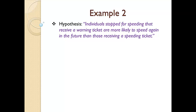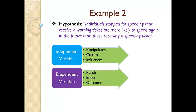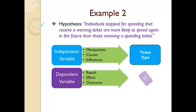This time, let's look at a hypothesis for a criminal justice related study. My hypothesis in this study will be: individuals stopped for speeding that receive a warning ticket are more likely to speed again in the near future than those receiving a speeding ticket. Take a moment and look at the criteria for both the independent and dependent variables. If you said the type of ticket is the independent variable, you are right. The type of ticket is the independent variable because we are looking at the effects of a warning ticket versus a speeding ticket on the likelihood to speed again in the near future. The dependent variable is the likelihood to speed again in the near future. See, this isn't that hard.